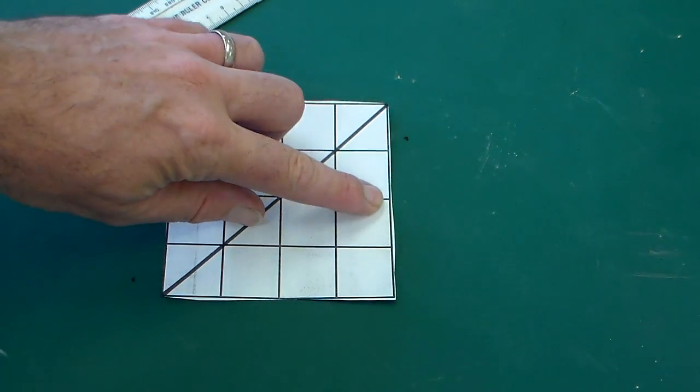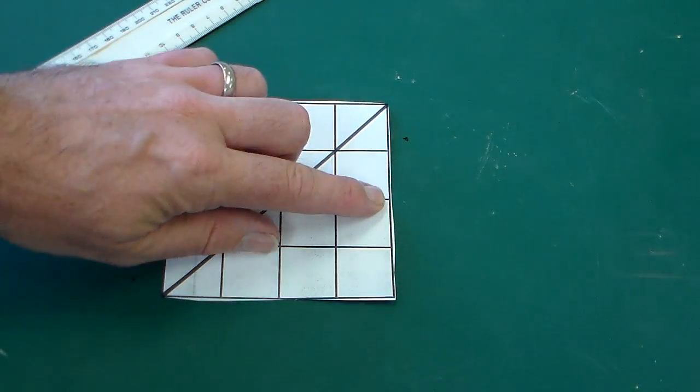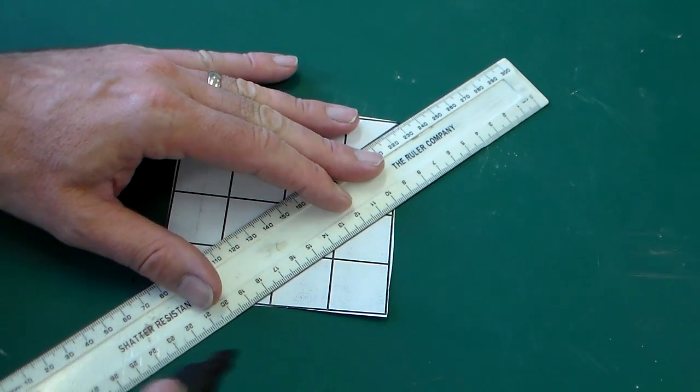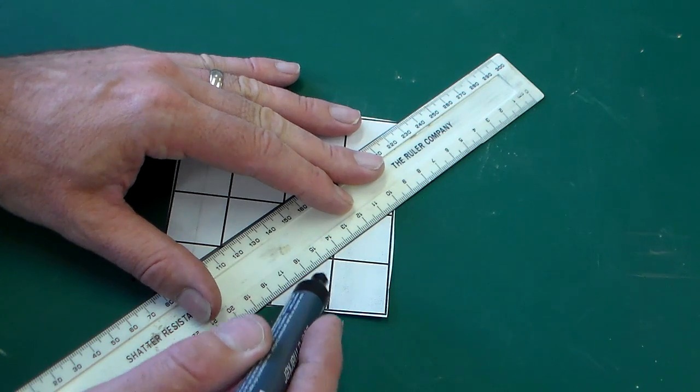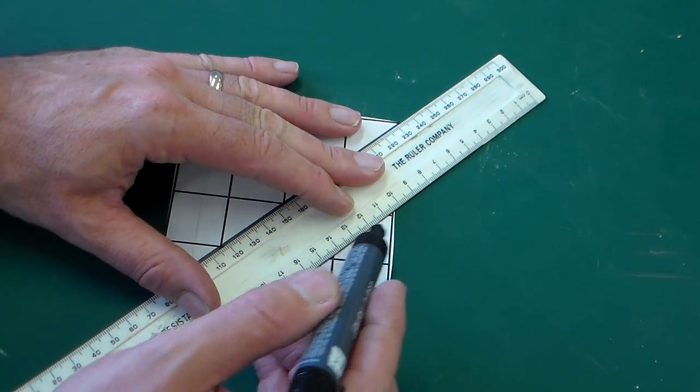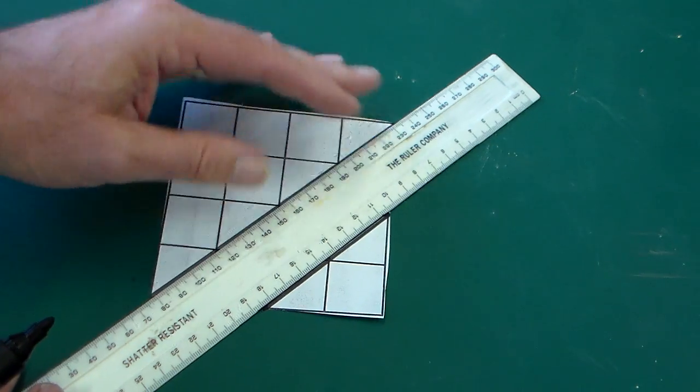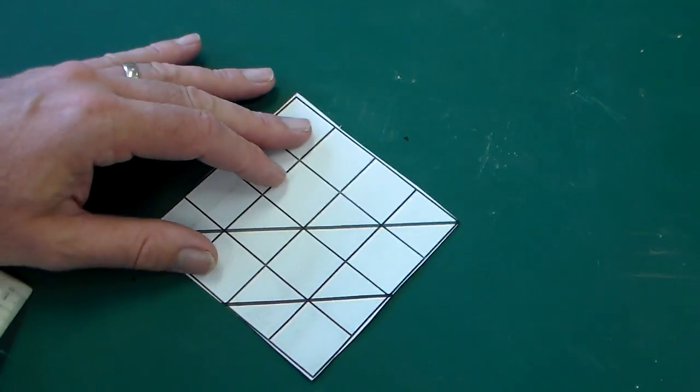Our second line is to go to these two points here, so this point here and this point here. So again, set the ruler onto one, bring it around to the next one, check that it's still on both, and draw our line. That's the second stage.